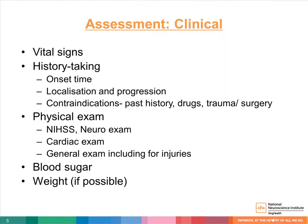As part of the clinical examination, one should take the vital signs, in particular noting the blood pressure and heart rhythm. History taking should be brief and to the point. Important facts that need to be established are time of onset of symptoms, assessment of symptoms to localize the lesion and determine its progression, and pointed ascertainment of contraindications for thrombolysis.